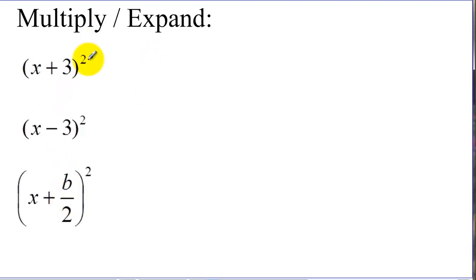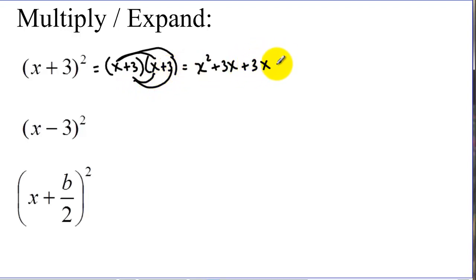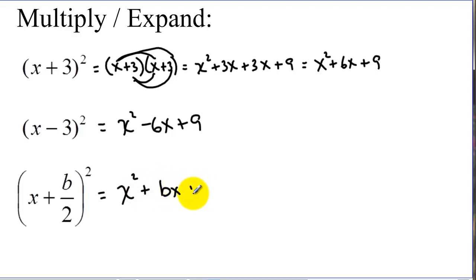Let's take a couple of binomials squared and expand them out. To expand, we are taking x plus 3 times x plus 3. If we distribute, we get x times x and x times 3, so we get x squared plus 3x. Now distributing the 3 gives us plus 3x plus 9, which is x squared plus 6x plus 9. If we did that down here, we would have x squared minus 6x plus 9. And if we expanded the general form, we would have x squared plus bx plus b over 2 squared.